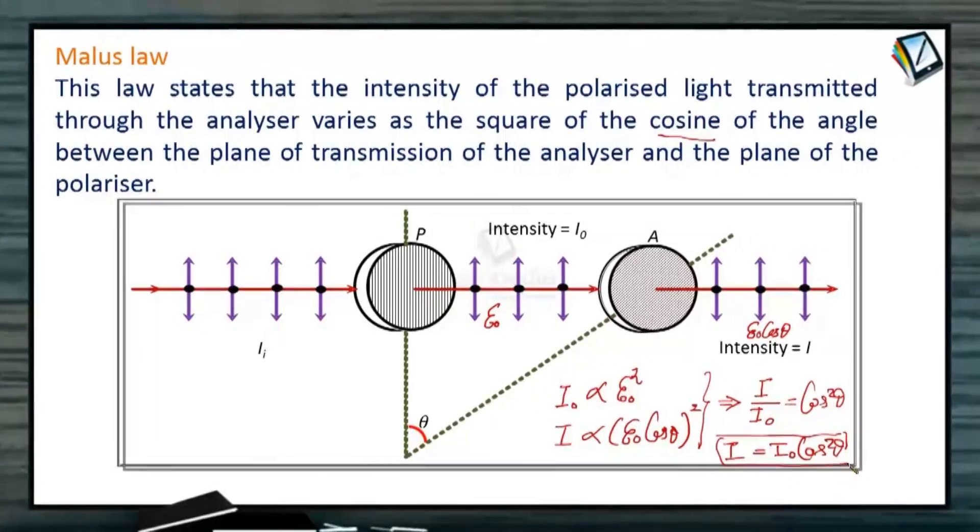So now you can understand this particular statement that this law states that the intensity of polarized light transmitted through the analyzer varies as the square of the cosine of the angle between the plane of transmission of the analyzer and the plane of polarizer. This is plane of polarizer and this is plane of analyzer. And angle between the two is theta.